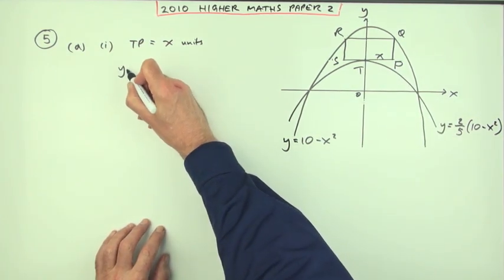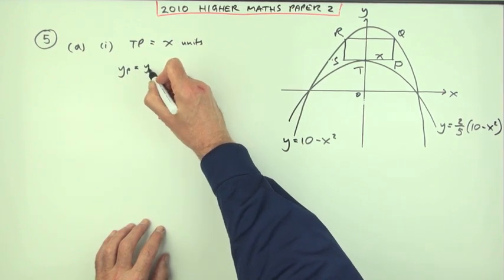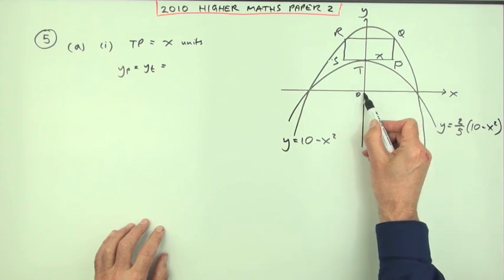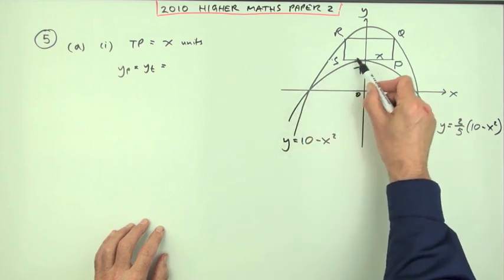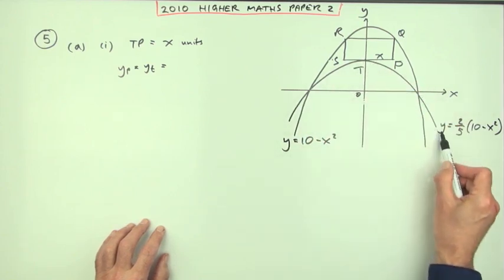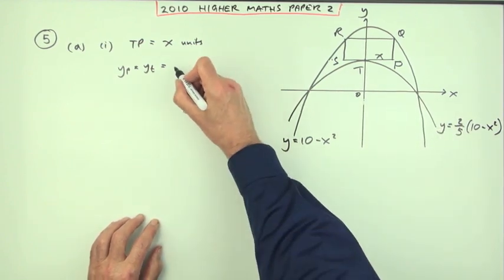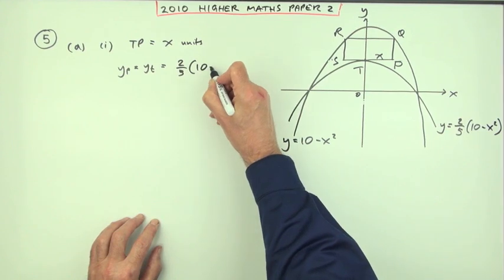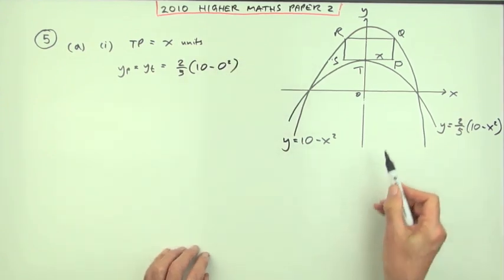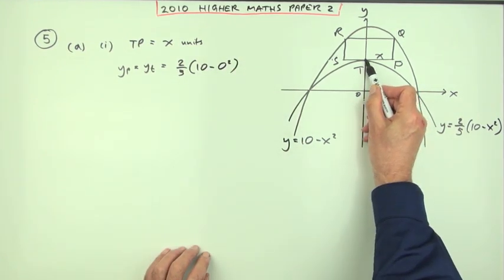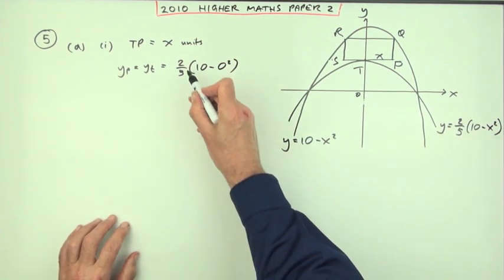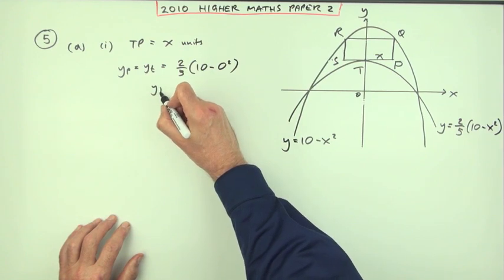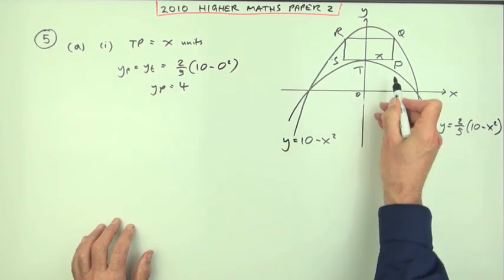So I'll put it down this way. The y-coordinate of P will equal the y-coordinate at T. T, I know the x-coordinate is 0, so just put 0 into the parabola that goes through T. That means it'll equal two-fifths of 10 minus 0 squared. What's the height of this point? Put 0 into this. So it's two-fifths of 10, that's 4. So that means the y-coordinate of P is equal to 4.